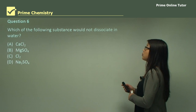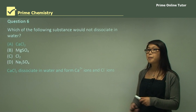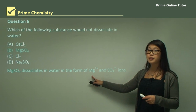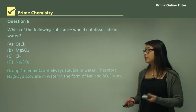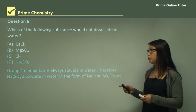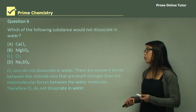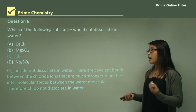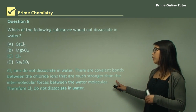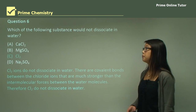Question: which of the following substances would not dissociate in water? Calcium chloride dissociates in water to form calcium and chloride ions — incorrect. Magnesium sulfate also dissociates to form magnesium and sulfate ions — incorrect. Na₂SO₄ contains sodium, a group one element, which is always soluble — it dissociates to form sodium and sulfate ions. Cl₂ does not dissociate in water because there are covalent bonds between the chloride atoms; they form a gas and covalent bonds are stronger than the intermolecular forces, so Cl₂ is the correct answer.